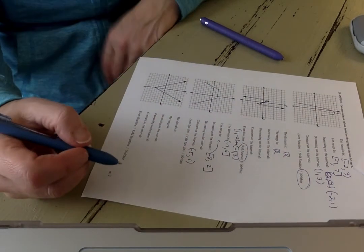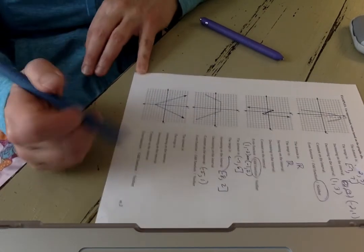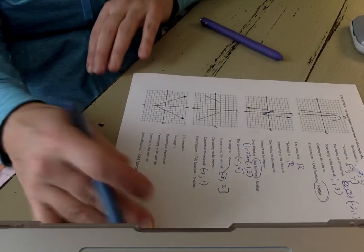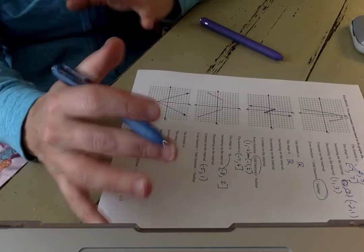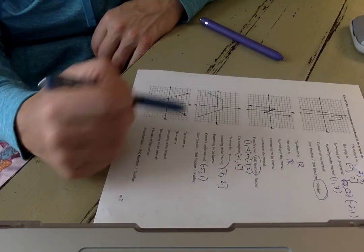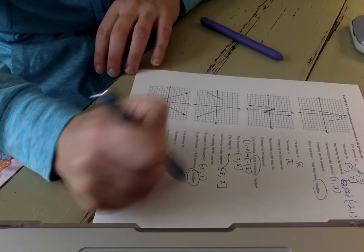Again, odd, even, or neither? I hope you look at this and you're like, this is absolutely going to be a neither because there is no symmetry with respect to the y-axis, and it's not symmetric to the origin. So this is a neither.